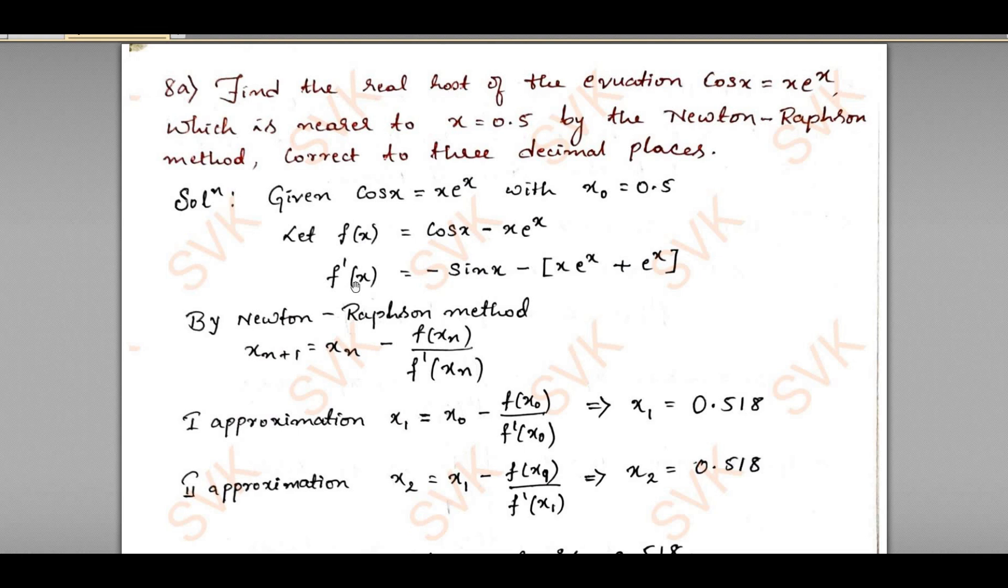For Newton-Raphson method, I need f'(x). So I am going to find out the derivative of the given function f(x). Derivative of cos x is minus sin x minus derivative of xe^(4x). For that, I will be applying product rule: x times derivative of e^(4x) is 4xe^(4x) plus e^(4x) times derivative of x is e^(4x). This is f'(x).